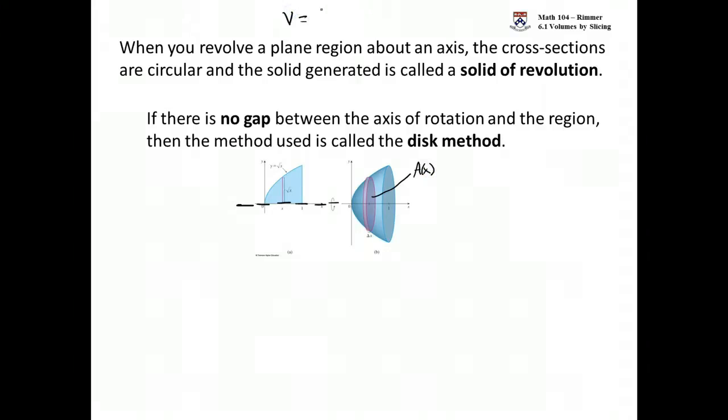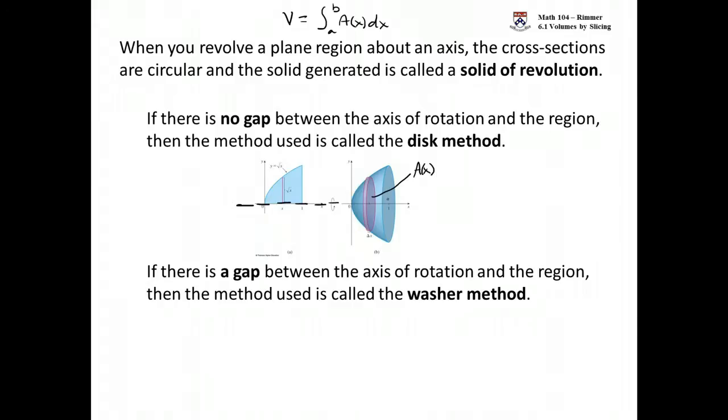Remember, the formula for volume is just to integrate from A to B the area of the cross section. Well, it's just a circle. That's going to be pi r squared. Now, if there is a gap, though, things will change.